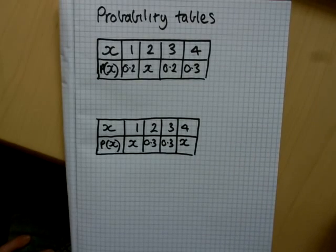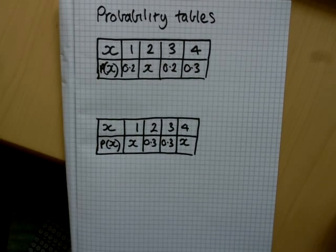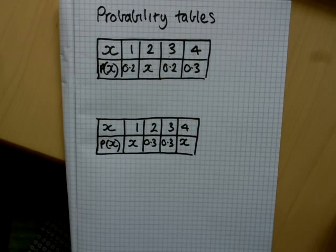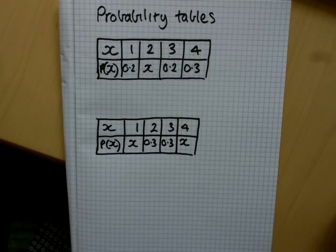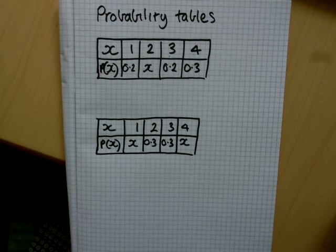We'll look at some probability tables. With probability, if you're given all of the possibilities of x, then a fact that must exist is that being one of those values — any one of them — will come to 1 altogether. So the probability of x being 1, 2, 3, or 4 is a certainty, because those are the only numbers x can be.